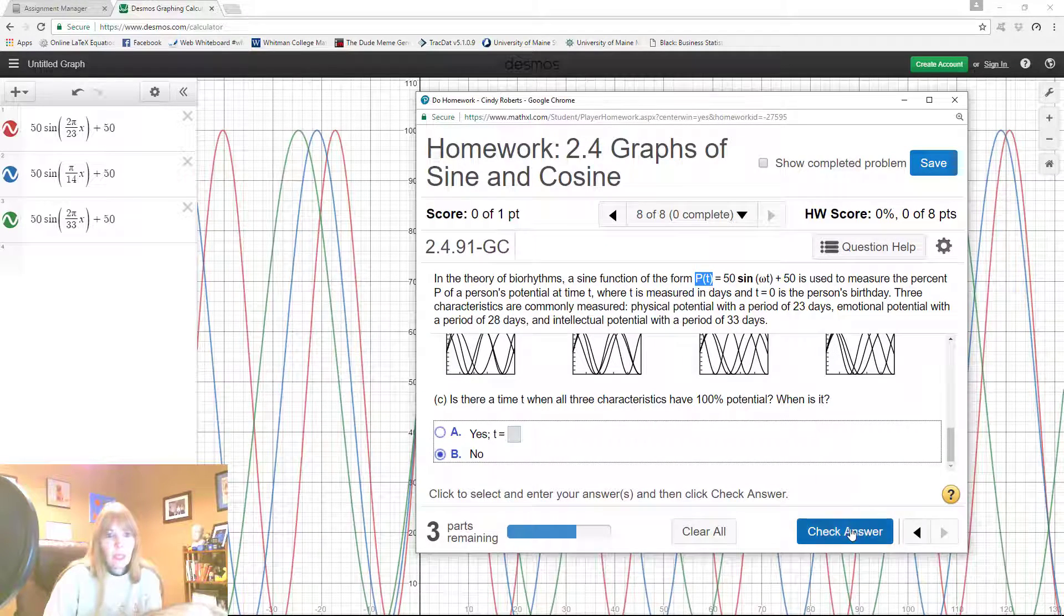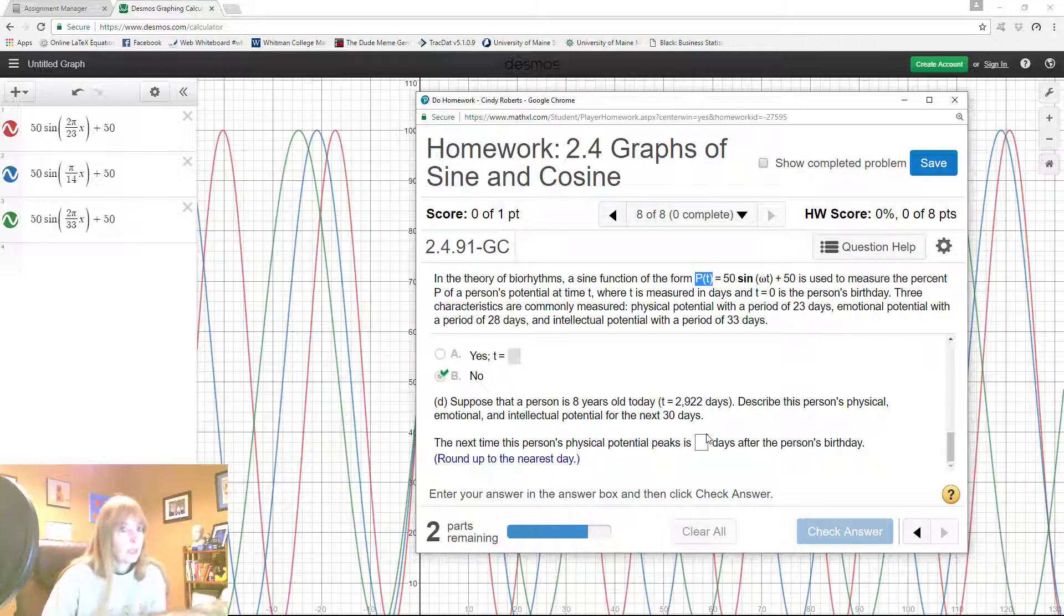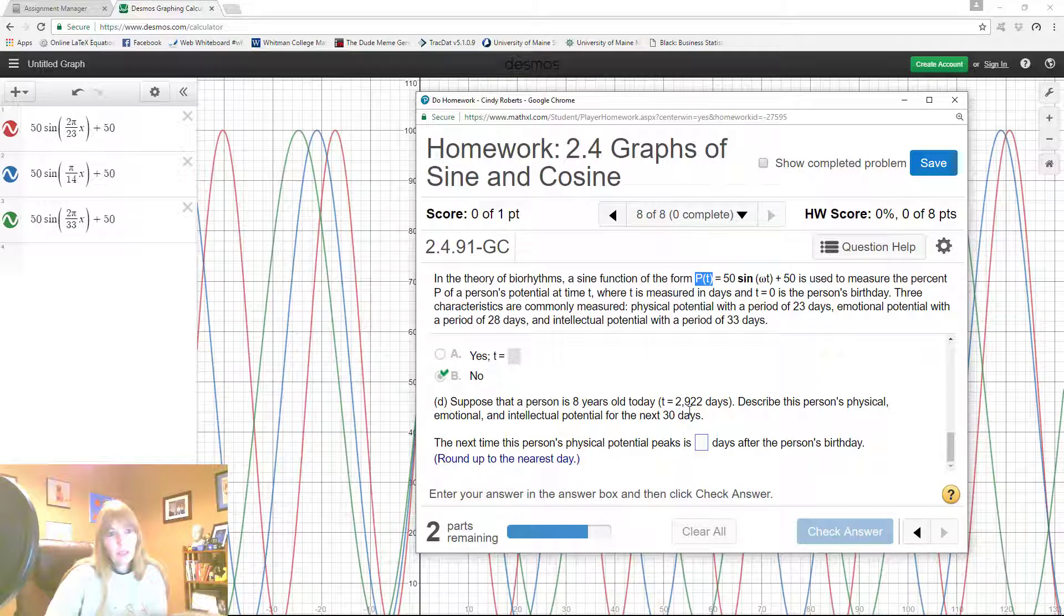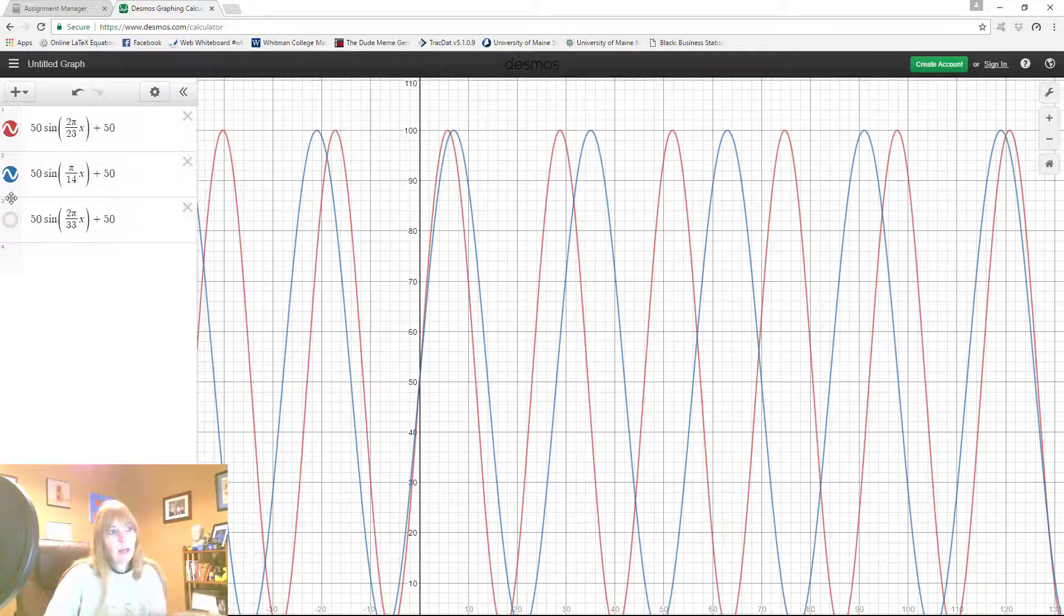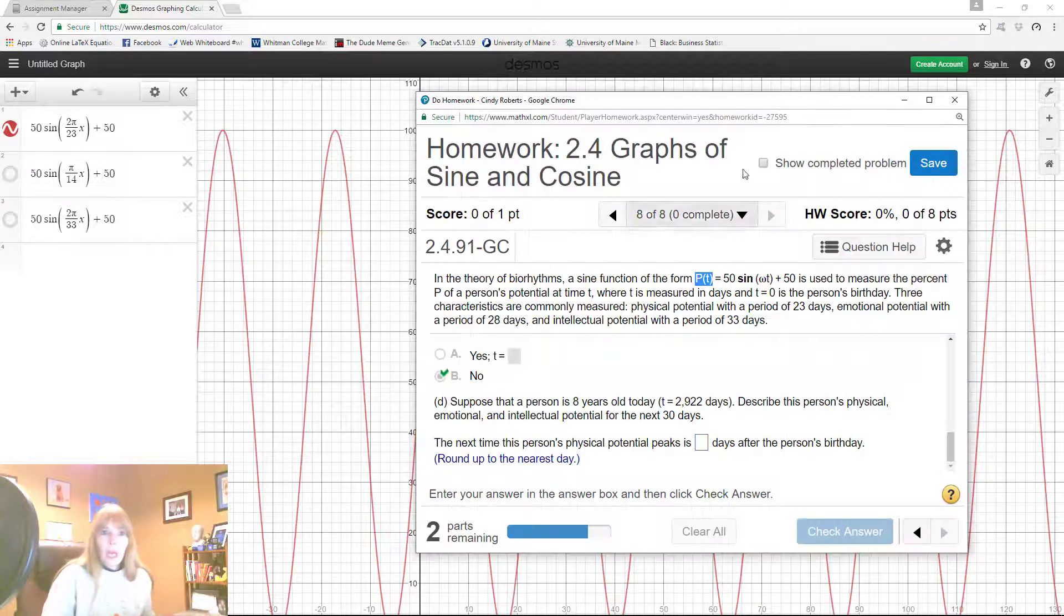And without calculus you can actually do this easier with calculus, well I don't want to say easier because calculus may not be easy to you, but I have to actually use the graph to figure this stuff out. So it says suppose that a person is eight years old today, 2922 days, and describe their physical, emotional, and intellectual. So I'm gonna do physical first. So over here if I click on these colors it gets rid of the graph and I kind of want to do that.